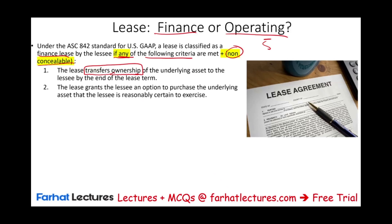The second condition: the lease grants the lessee an option to purchase the underlying asset at a price reasonably certain to be exercised. It means there's no transfer of ownership, but they give you a dollar amount substantially less than the fair market value of the asset, which any reasonable person will exercise. So if we met condition one or two, that's it — it's a finance lease. For example, if the lease says you can buy this property for $500 and it's worth $10,000, no one will pass that option — there is a bargain purchase price, and the lease is a finance lease.